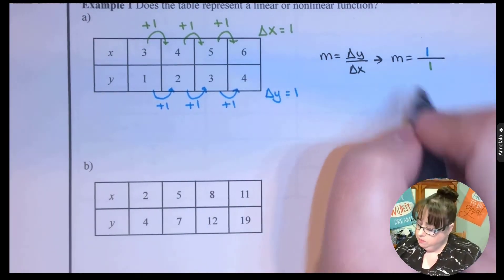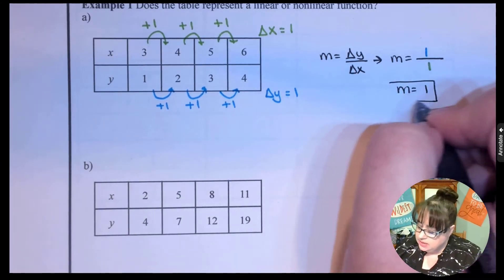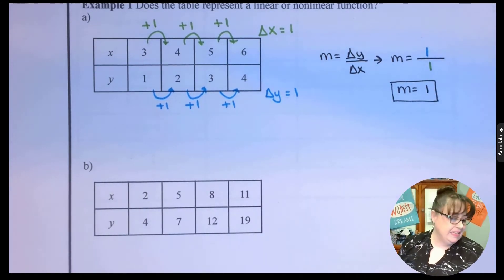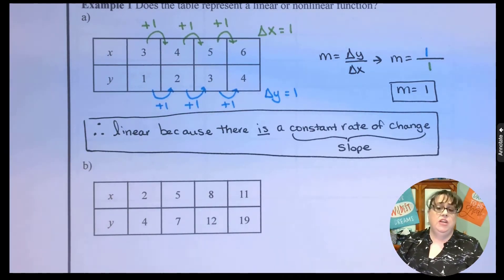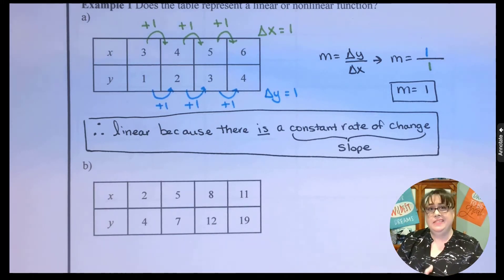And so when I take that, m would be 1. Since I have a nice slope, this is linear. It is linear because there is a constant rate of change. And when we just say constant rate of change, we mean slope. That is the key.